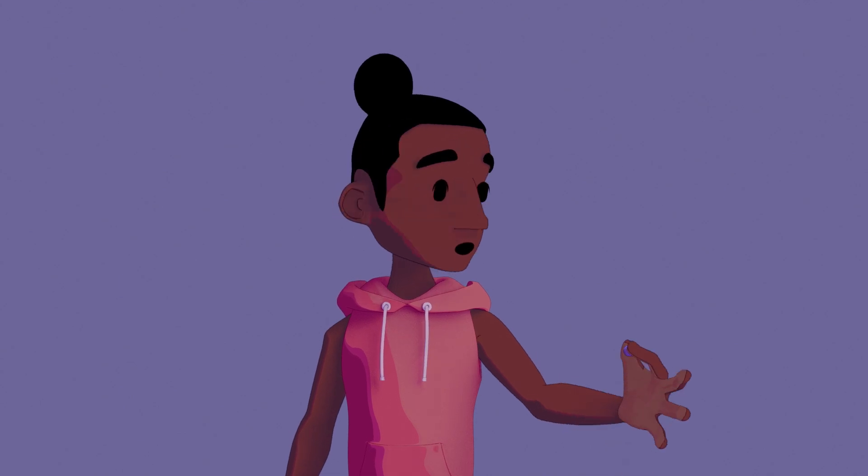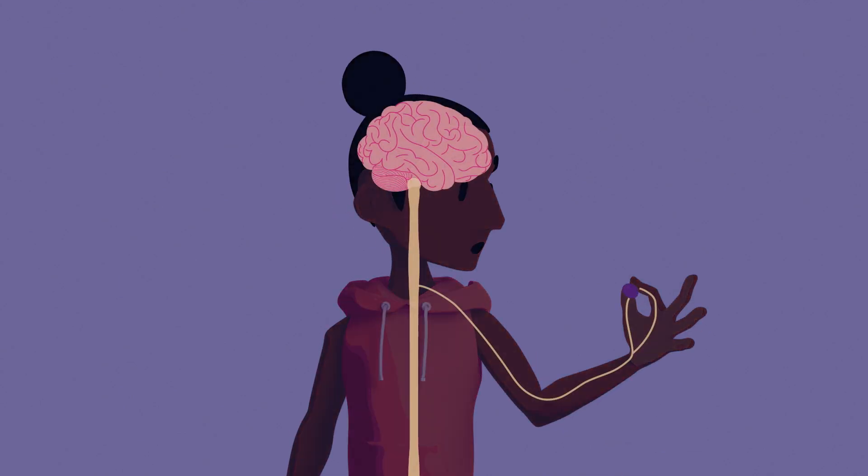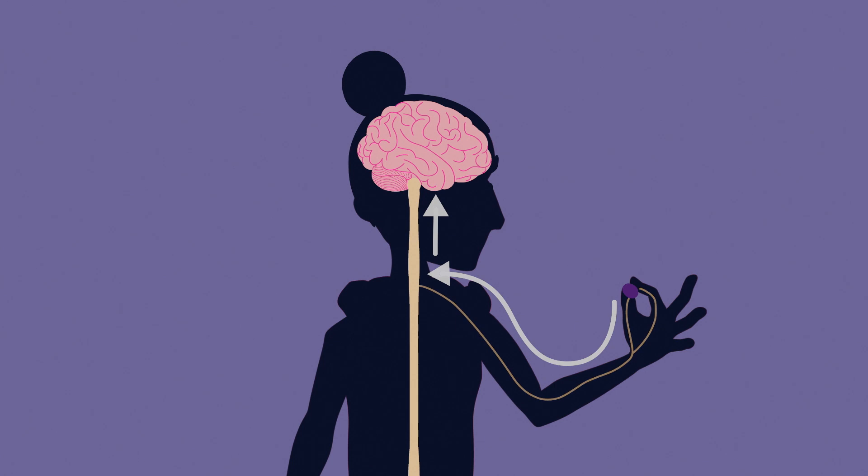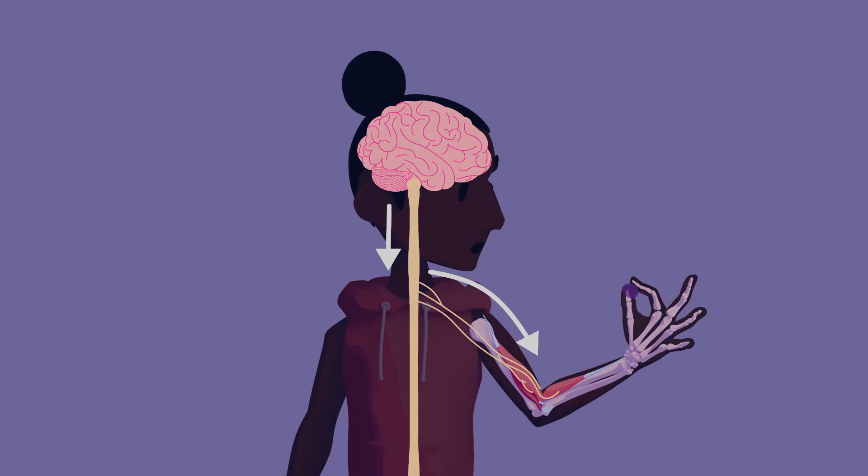Nerves in your body pick up sensations from your skin and send that information to your brain via the spinal cord. Your brain sends signals through the spinal cord to nerves connected to your muscles and tells them to move.